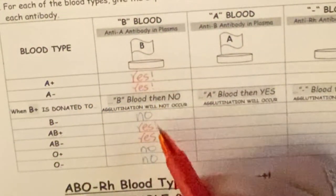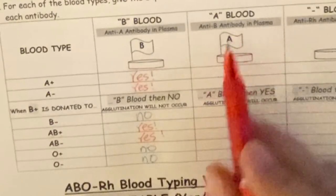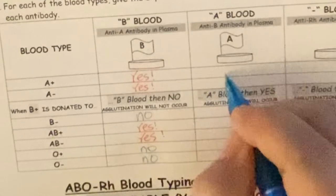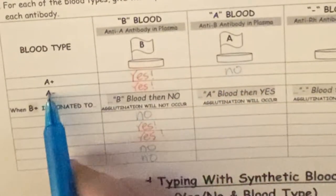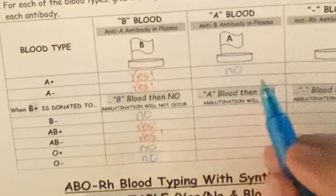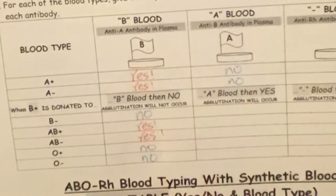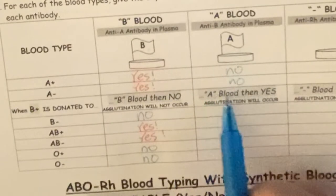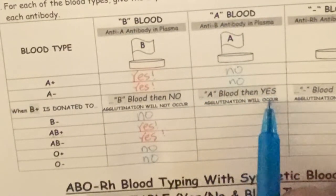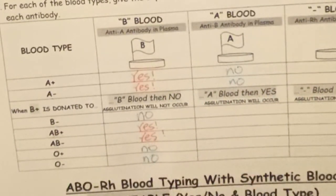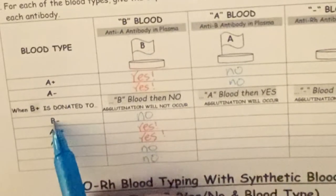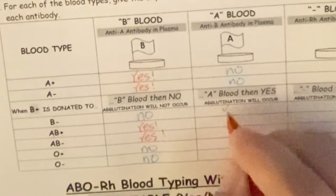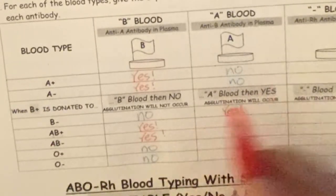Now looking at A blood: if A blood goes into A blood, there's going to be no agglutination because it recognizes it. A blood carries the anti-B antibody, so it's against B, not A — we're fine. If you put B into A, we have the anti-B antibody, so yes, agglutination will occur. Same for B negative — agglutination will occur because of the anti-B antibody.